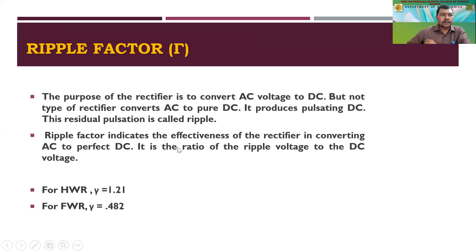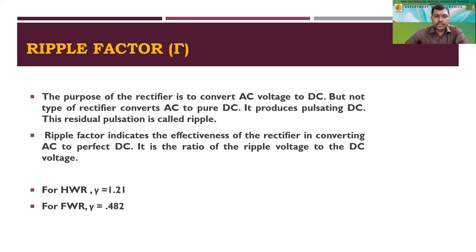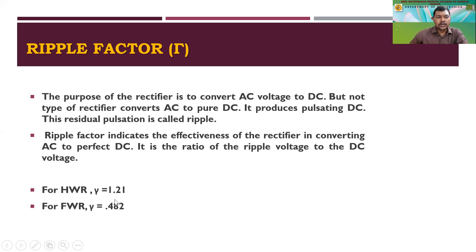The purpose of a rectifier is to convert AC voltage to DC, but no rectifier converts AC to pure DC — it produces pulsating DC. This residual pulsation is called ripple, and the ripple factor indicates the effectiveness of the rectifier in converting AC to perfect DC. It is the ratio of the ripple component to the DC voltage. The ripple factor for a half wave rectifier is 1.21, whereas it is reduced to 0.482 for the full wave rectifier.